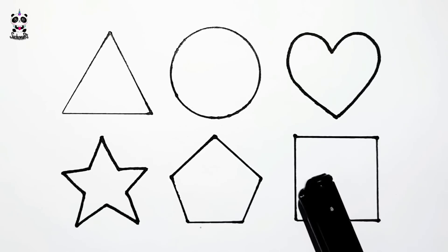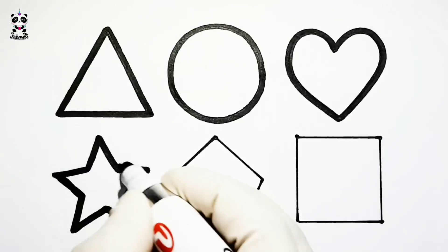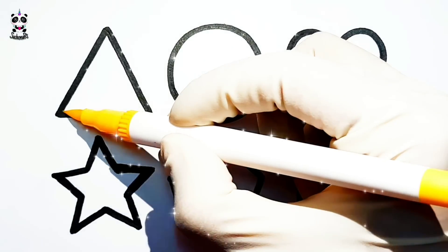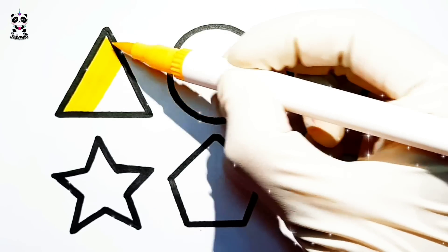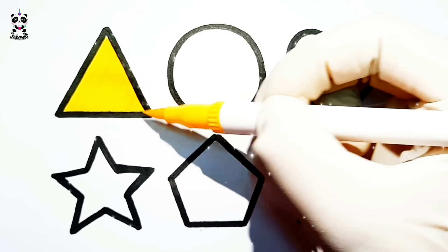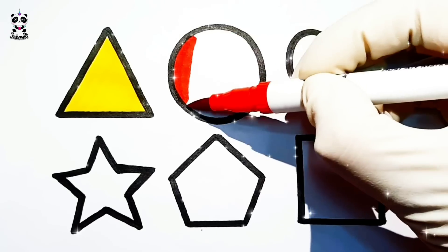Square. A-B-C-D-E-F-G, H-I-J-K-L-M-N-O-P, Yellow, R-S-T-U-V, W-X-Y-and-Z. Now I know my ABCs, Red, next time won't you sing with me?